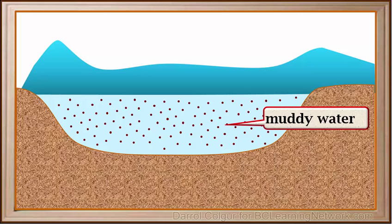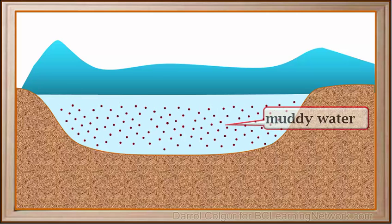Gravity separation occurs widely in nature. For example, the muddy water in this lake is a suspension of silt or clay particles in the water. Silt and clay particles are more dense than water, so over time the silt and clay particles will gradually sink to the bottom.